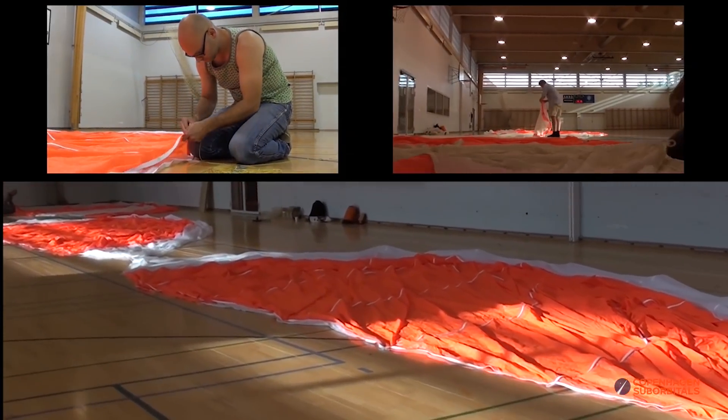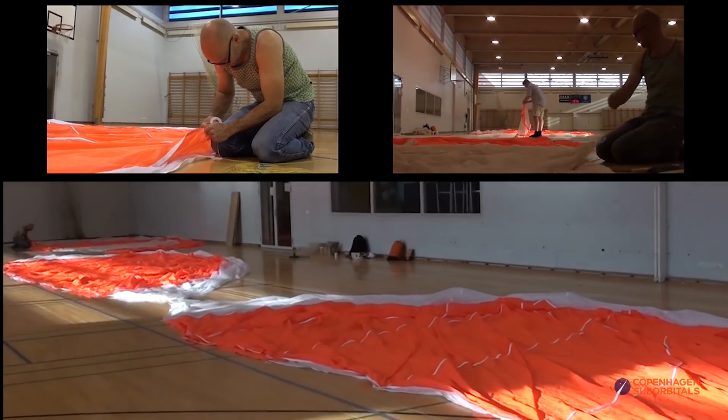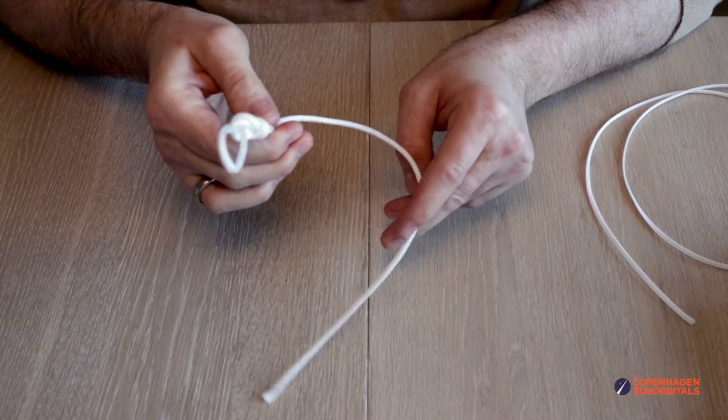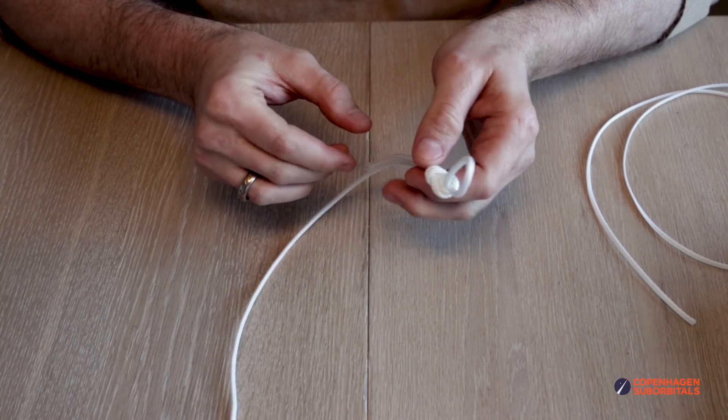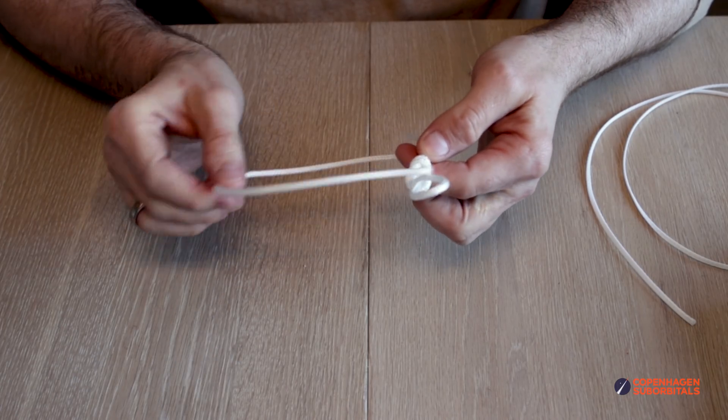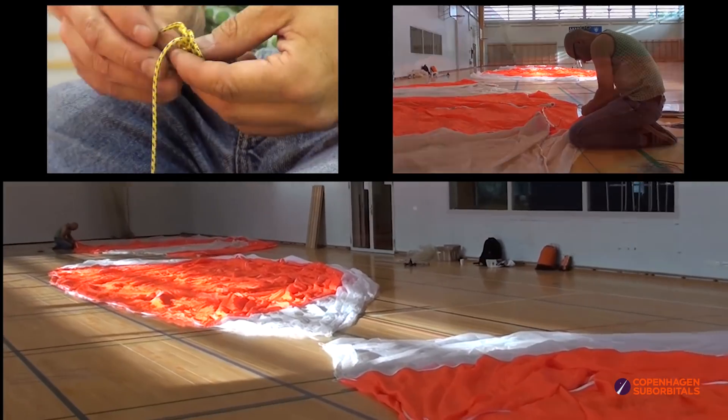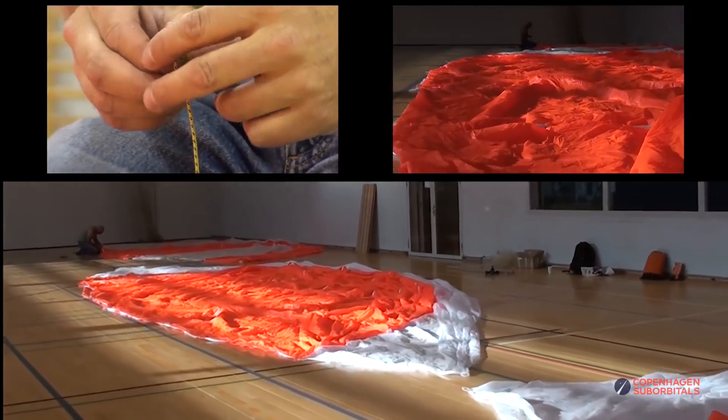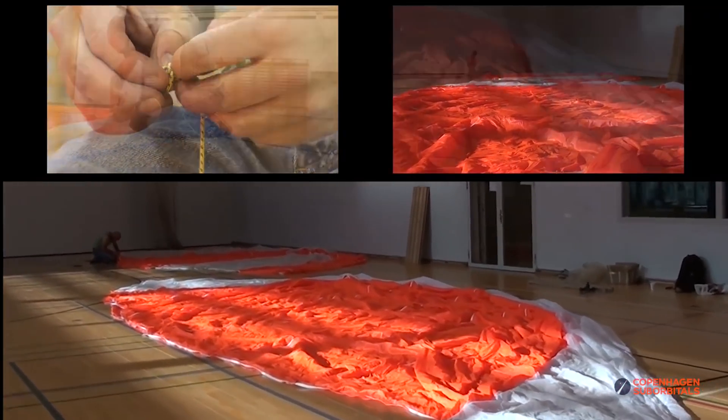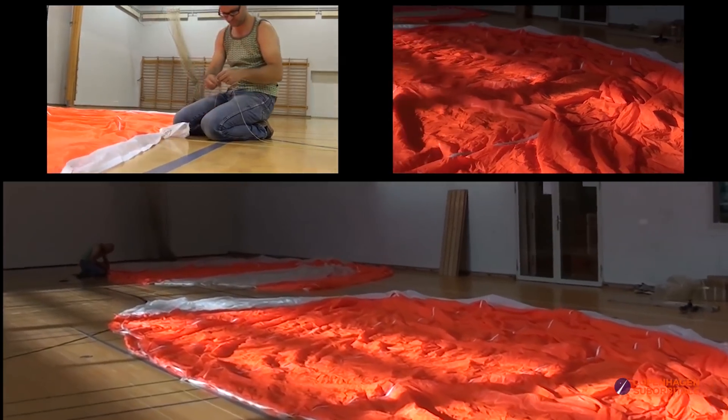Way back in the beginning of the project, when making suspension lines, you would typically just tie a figure-8 knot when adding the suspension lines to the parachute. Since then, we have learned a lot of new tricks, one of which is the art of splicing the lines.